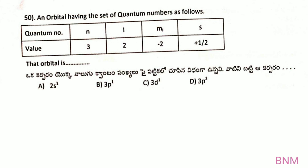An orbital having the set of quantum numbers n=3, l=2, mₗ=-2, mₛ=+½. N=3 means the third orbit. L=2 means a d orbital. So this is a 3d orbital.